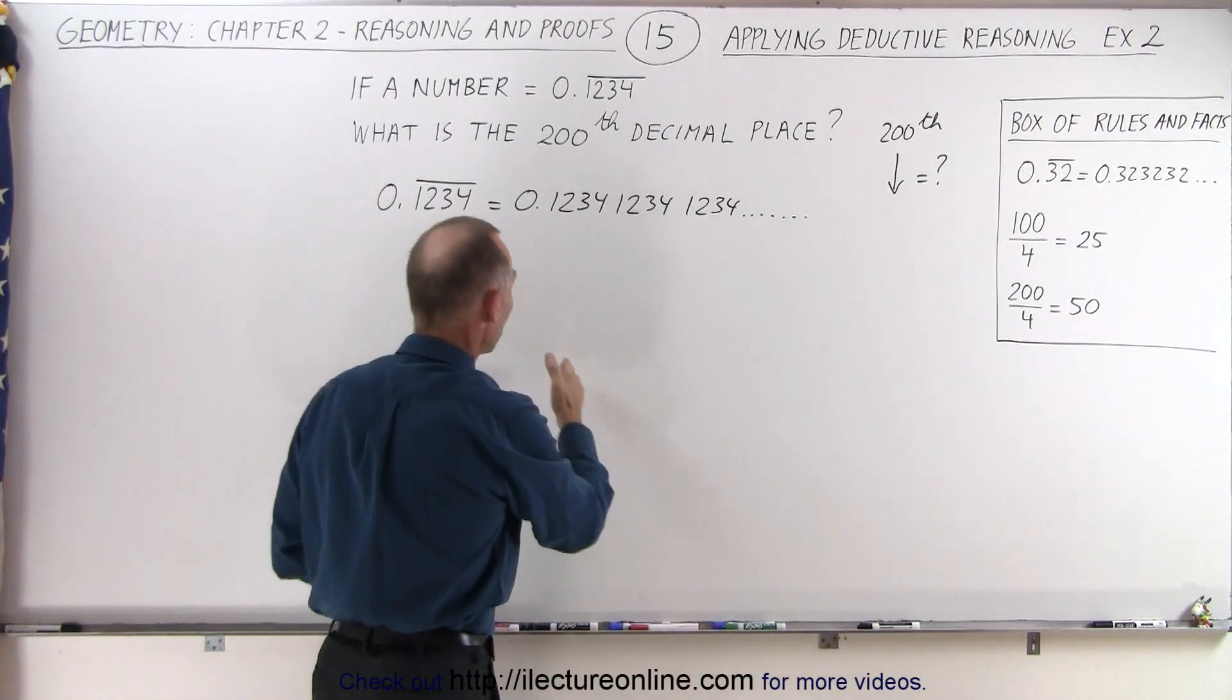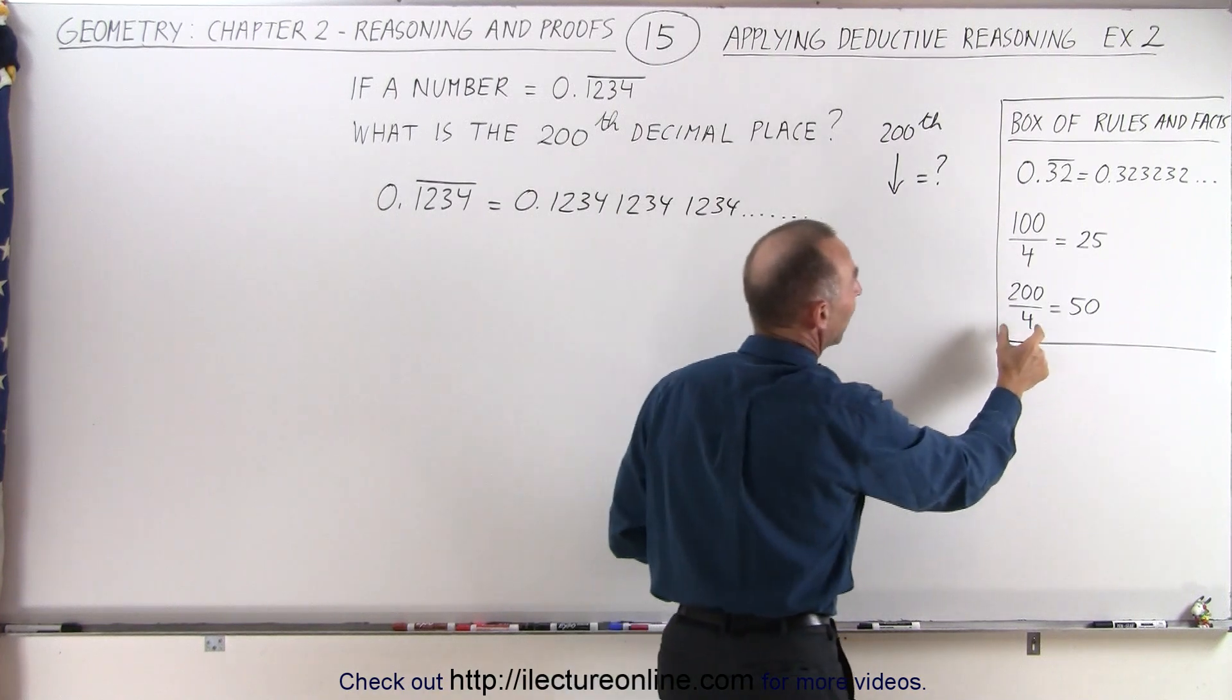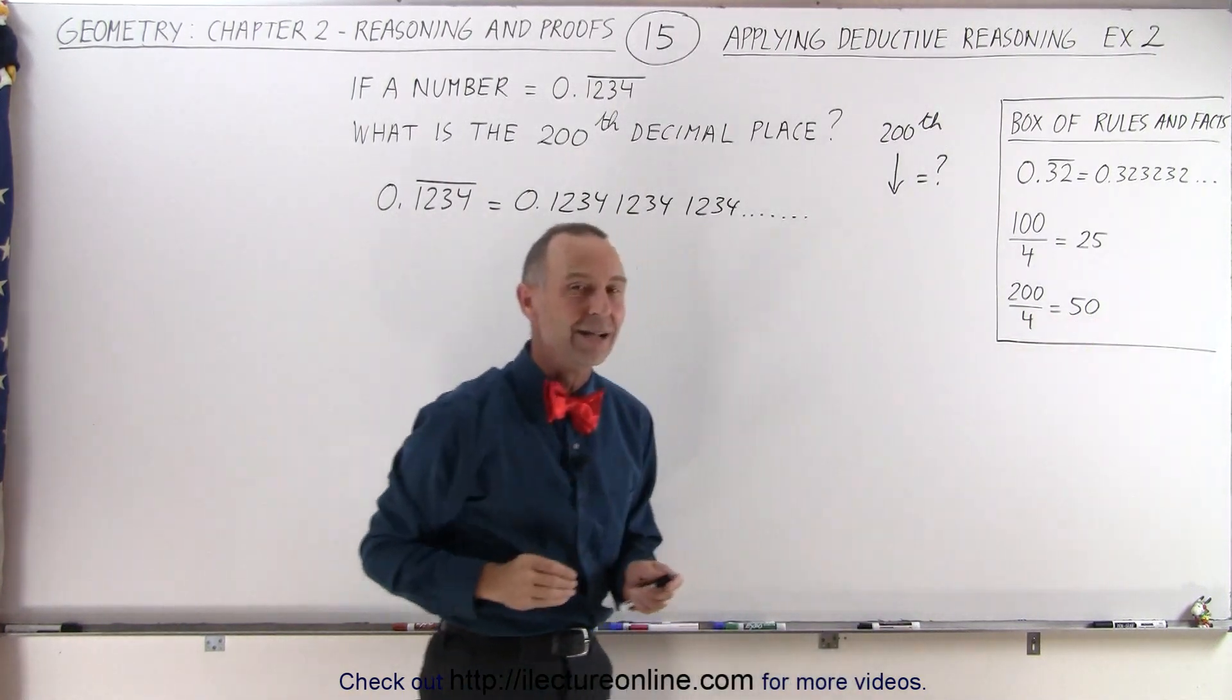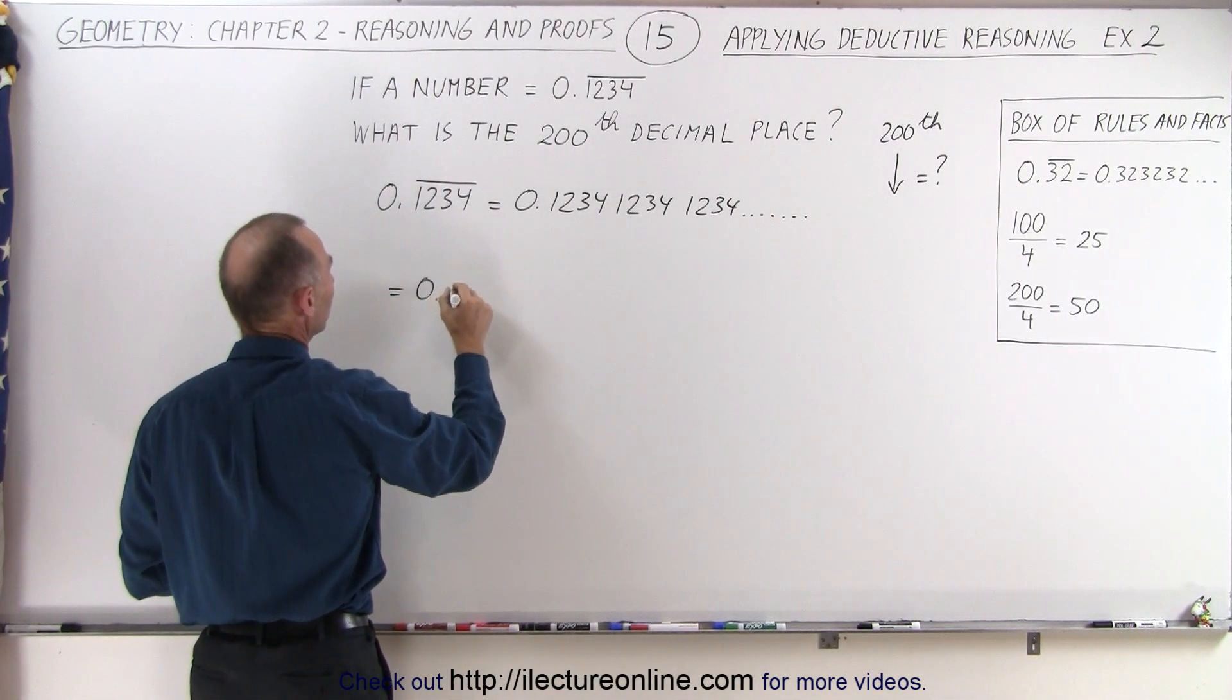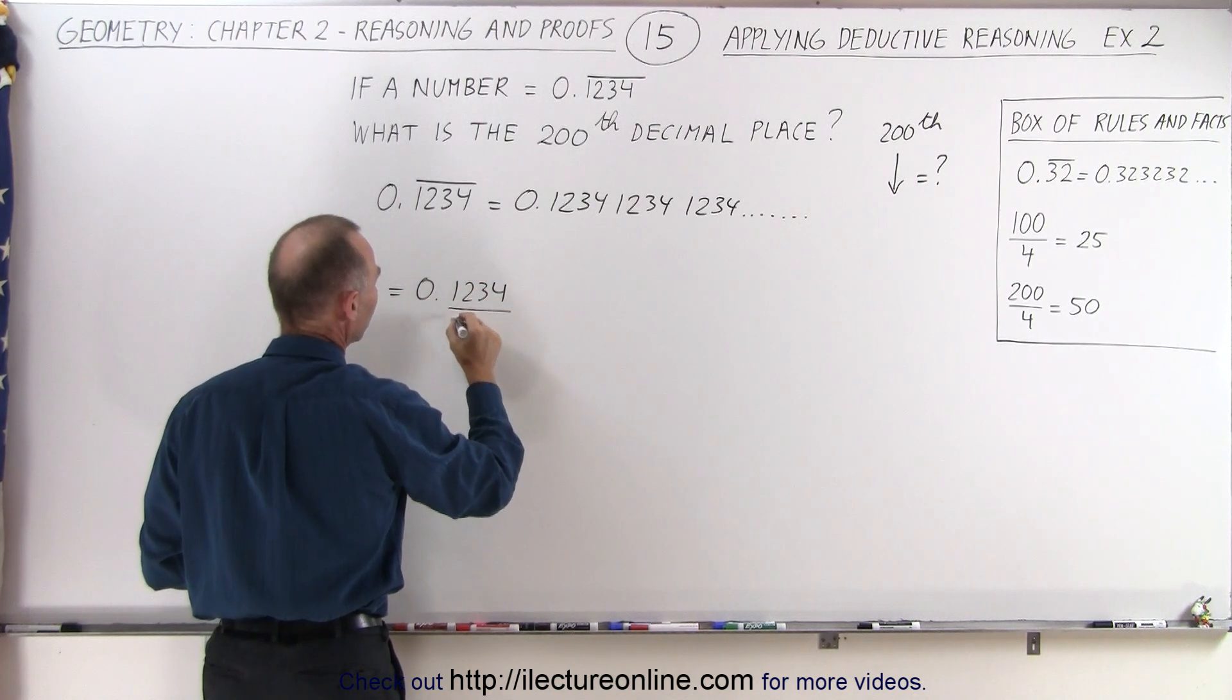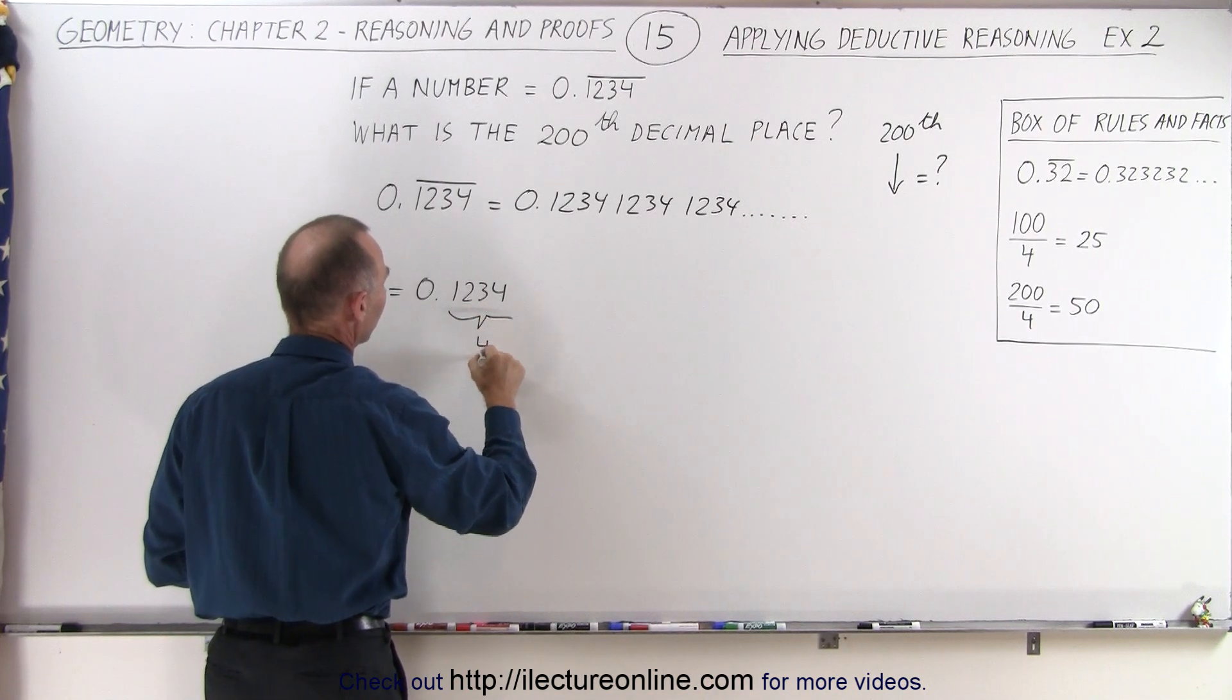That means that if we write this number with 200 decimal places, we will have the numbers 1, 2, 3, 4 repeat 50 times. And so what that number will look like is 0.1234. So that's the first 4 numbers. And I should draw a line like that, maybe just something like this. 4 numbers.